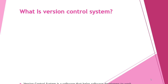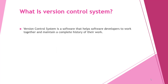What is a version control system? A version control system is software that helps software developers work together and maintain a complete history of their work. When multiple developers are working on the same feature or same project, one can submit one part of the project, another can submit another part, and you can bring them together to make the build.